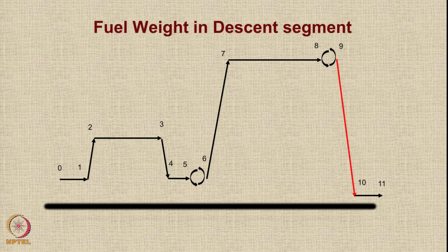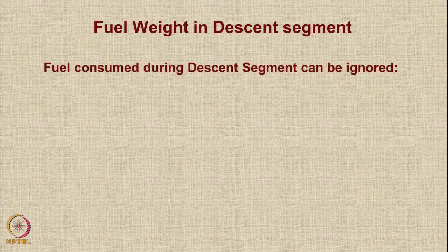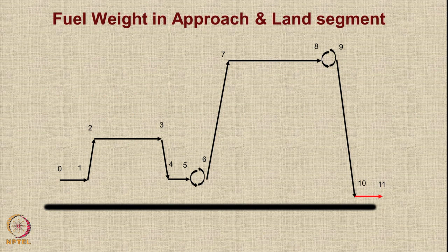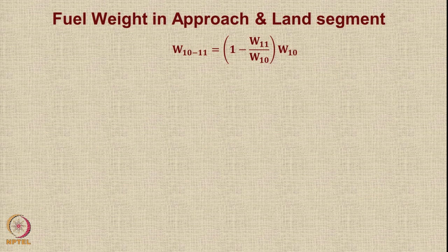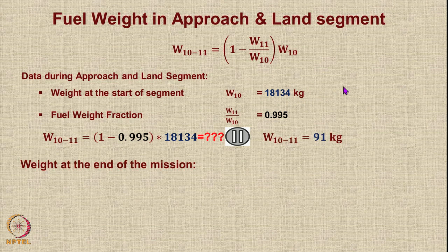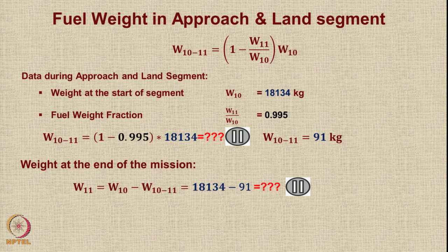In the descent segment, fuel consumed and distance are again ignored, so the weight remains 18,134 kg. We also assume the aircraft returns with its remaining (fixed) payload intact, so W10 = 18,134 kg. For the approach and landing segment, the weight ratio is assumed to be 0.995 (historical value). Fuel consumed = (1 − 0.995) × 18,134 = 91 kg. The weight at the end of the mission is 18,134 − 91 = 18,043 kg.